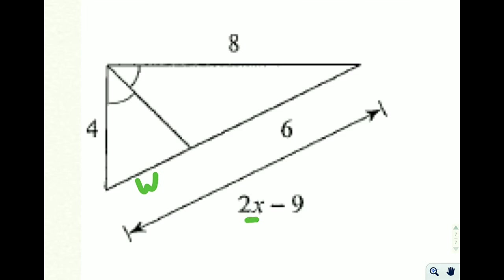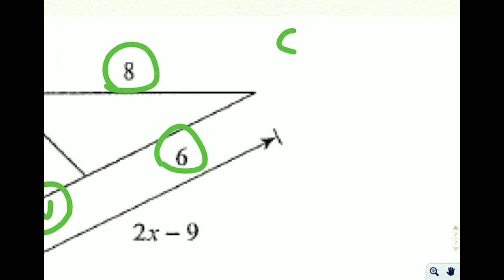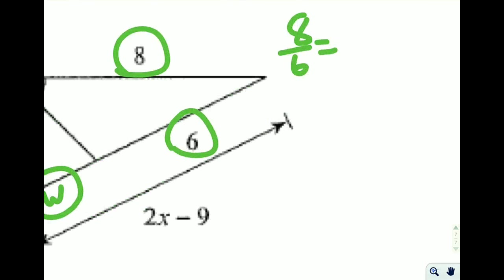We don't want to call it x, we already have an x. x means something in this problem. So let's just call this w and let's try to solve it. 8 over 6 equals 4 over our new made up variable w. So 8 over 6 equals 4 over w.